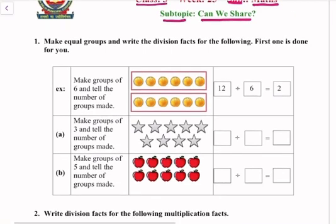For example, make groups of six and tell the number of groups made. The total number of oranges is 12, and we have to make groups of six, so we will divide by six. The answer is two. Now, make groups of three and tell the number of groups made.